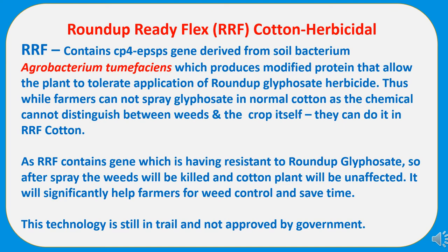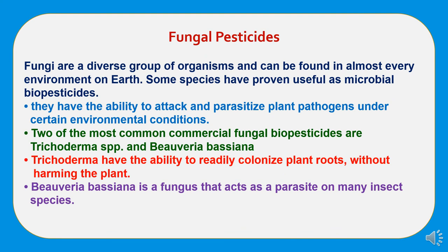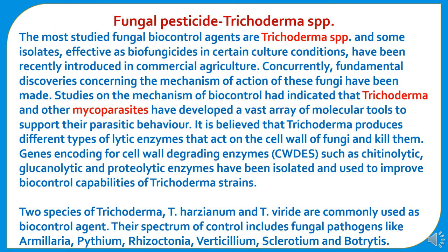Now, studying fungal pesticides: fungi are a diverse group of organisms found in almost every environment on earth. Some species have proven useful as microbial biopesticides, with the ability to attack and parasitize plant pathogens under certain environmental conditions. Two of the most common commercial fungal biopesticides are Trichoderma species and Beauveria bassiana. Trichoderma can readily colonize plant roots without harming the plant, while Beauveria bassiana is a fungus that acts as a parasite on many insect species.